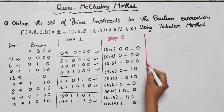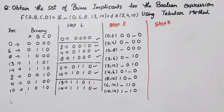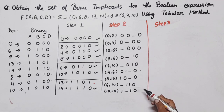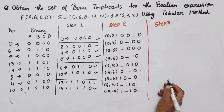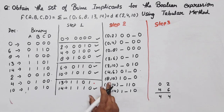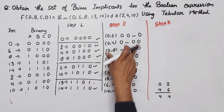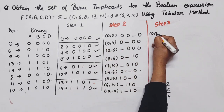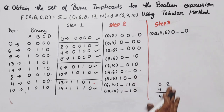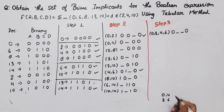Now the third reduction — we will make quads. First quad: comparing pairs (0,2) with (4,6) and (0,4) with (2,6). The difference between them is 4 in both cases, which is a power of 2, so this is possible. After checking bit positions with only 1 bit changing, the first quad is (0,2,4,6), giving binary 00--. We mark all four pairs as covered.